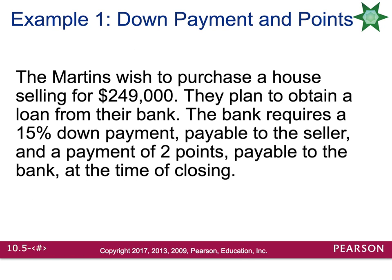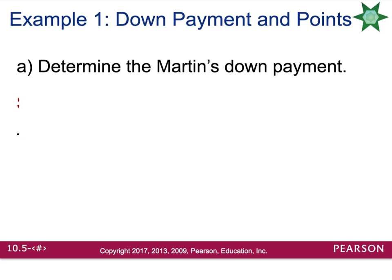Now let's look at an example. The Martins wish to purchase a house selling for $249,000. They plan to obtain a loan from their bank. The bank requires a 15% down payment payable to the seller and a payment of two points payable to the bank at the time of closing. The purchase price is $249,000, and 15% as a decimal is 0.15. Multiplying gives a down payment of $37,350.